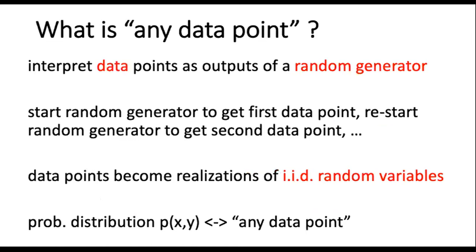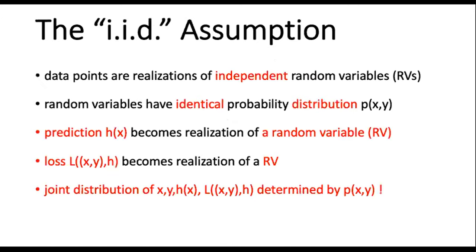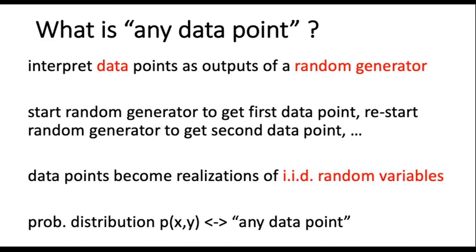Now that we have a measure for the size of the prediction error, we need to make precise our requirement that the prediction error should be small for any data point. To this end we interpret the data points as the results or outputs of a random generator. We think of some fictional underlying random generator, where each data point is obtained from a separate, independent execution of it. In this model, data points become realizations of independent and identically distributed random variables.